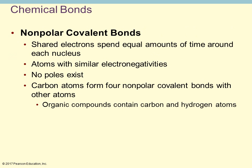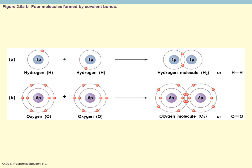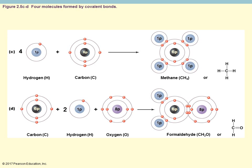Covalent bonds occur when atoms are sharing electrons. They may be either polar or non-polar. Non-polar covalent bonds involve equal sharing — there's an equal pull from both sides involved in that bond. For example, two hydrogen atoms each share electrons equally, or two oxygen atoms share two pairs of electrons in the outermost shell — this is equal sharing.